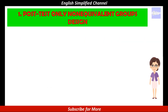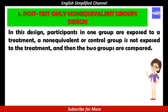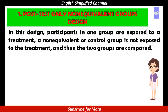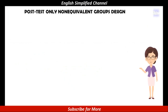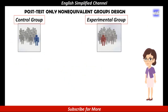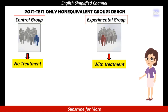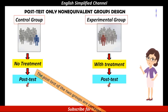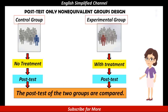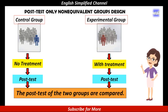Number 1. Post-test only non-equivalent groups design. In this design, participants in one group are exposed to treatment, a non-equivalent or control group is not exposed to the treatment, and then the two groups are compared. This design has two groups of sample — experimental and control groups. Treatment is only given to the experimental group, or the control group is with no treatment. After that, the two groups are tested, which is called post-test. So there is only post-test in this design, or this design is without pre-test. Finally, the data is analyzed by comparing the post-test of the two groups.